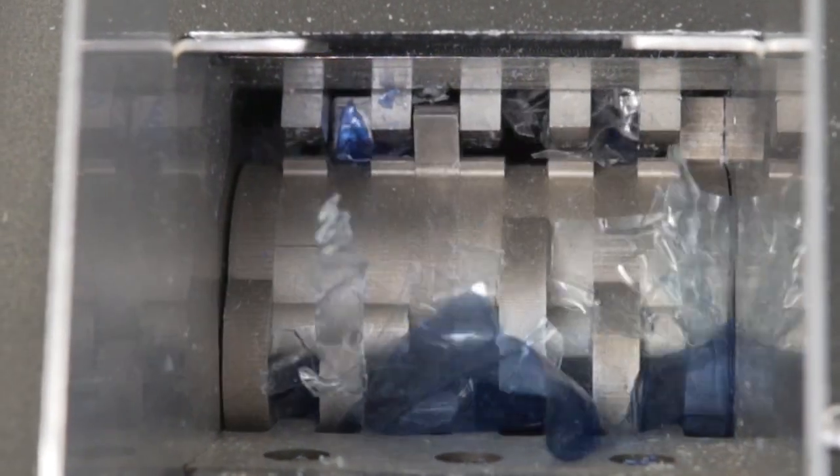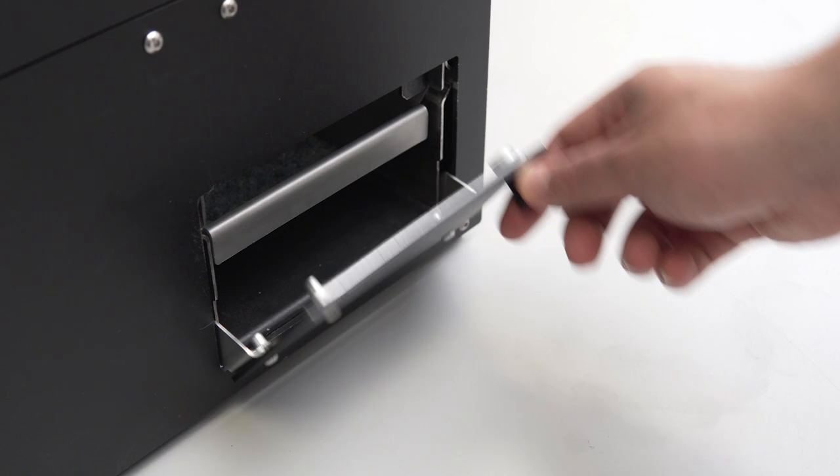Using a shredding machine, we are going to transform the pieces of the bottle into nice homogenous regrinds.